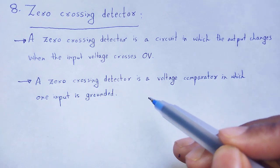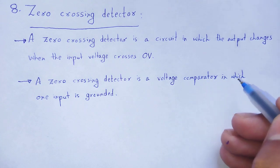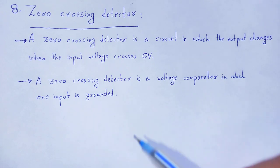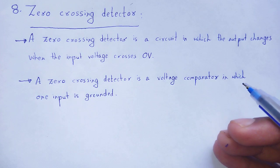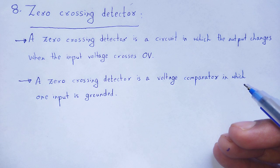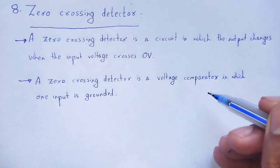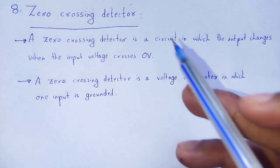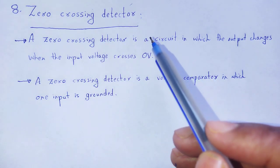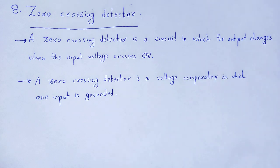A zero crossing detector is a voltage comparator in which one input is grounded. A voltage comparator is a circuit in which we compare two voltages, taking one of the voltages as a reference voltage and comparing another voltage to that reference. Such a voltage comparator can be made using an op-amp. Here we discuss how a zero crossing detector circuit is created by taking an op-amp.